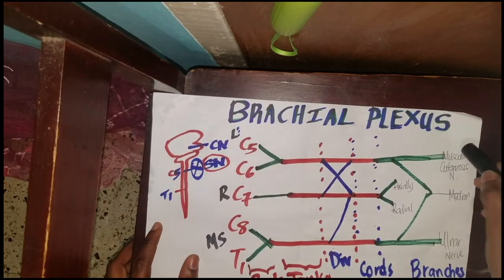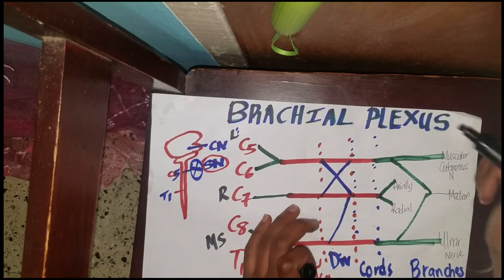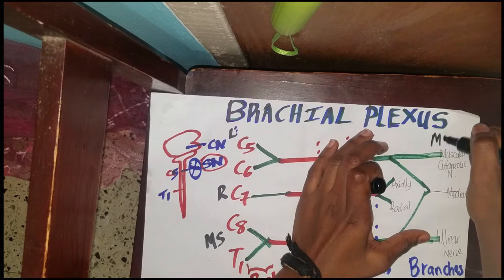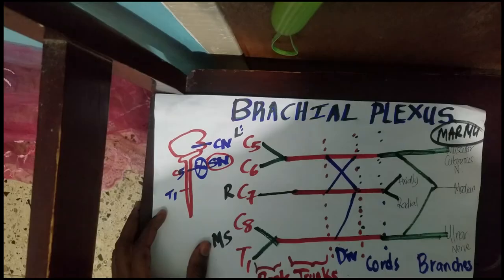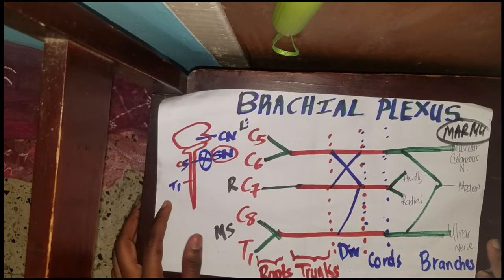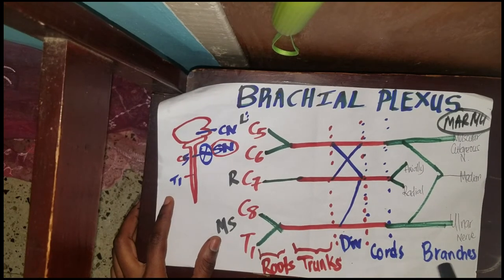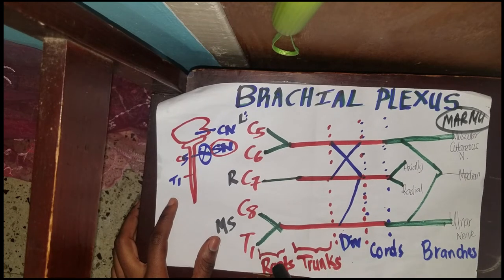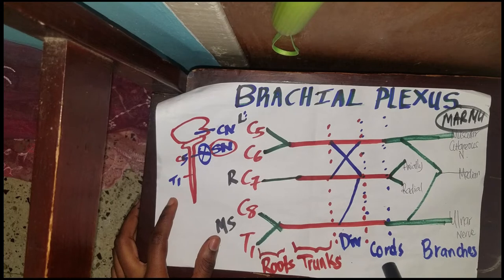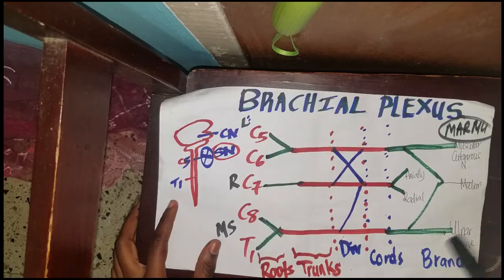To remember the branches I use the abbreviation MARMU — that helps you remember all your branches. And to remember the different segments — roots, trunks, divisions, cords, and branches — I use 'Robin Thick Drinks Cold Beer.' That's how I remember the different sections.